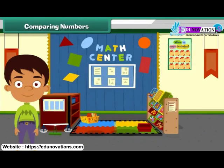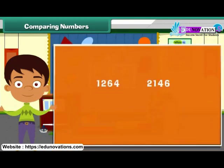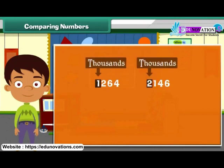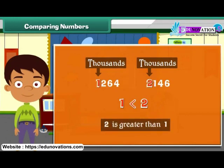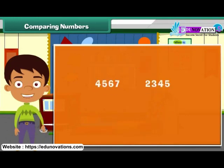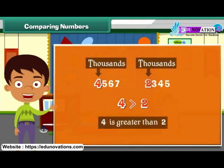Comparing numbers: let us now learn to compare numbers. To compare two four-digit numbers, we first compare the digits at the thousands place. The number that has a greater digit at the thousands place is the larger of the two. For example, let us compare 4,567 and 2,345. Since 4 is greater than 2, we can say that 4,567 is larger.